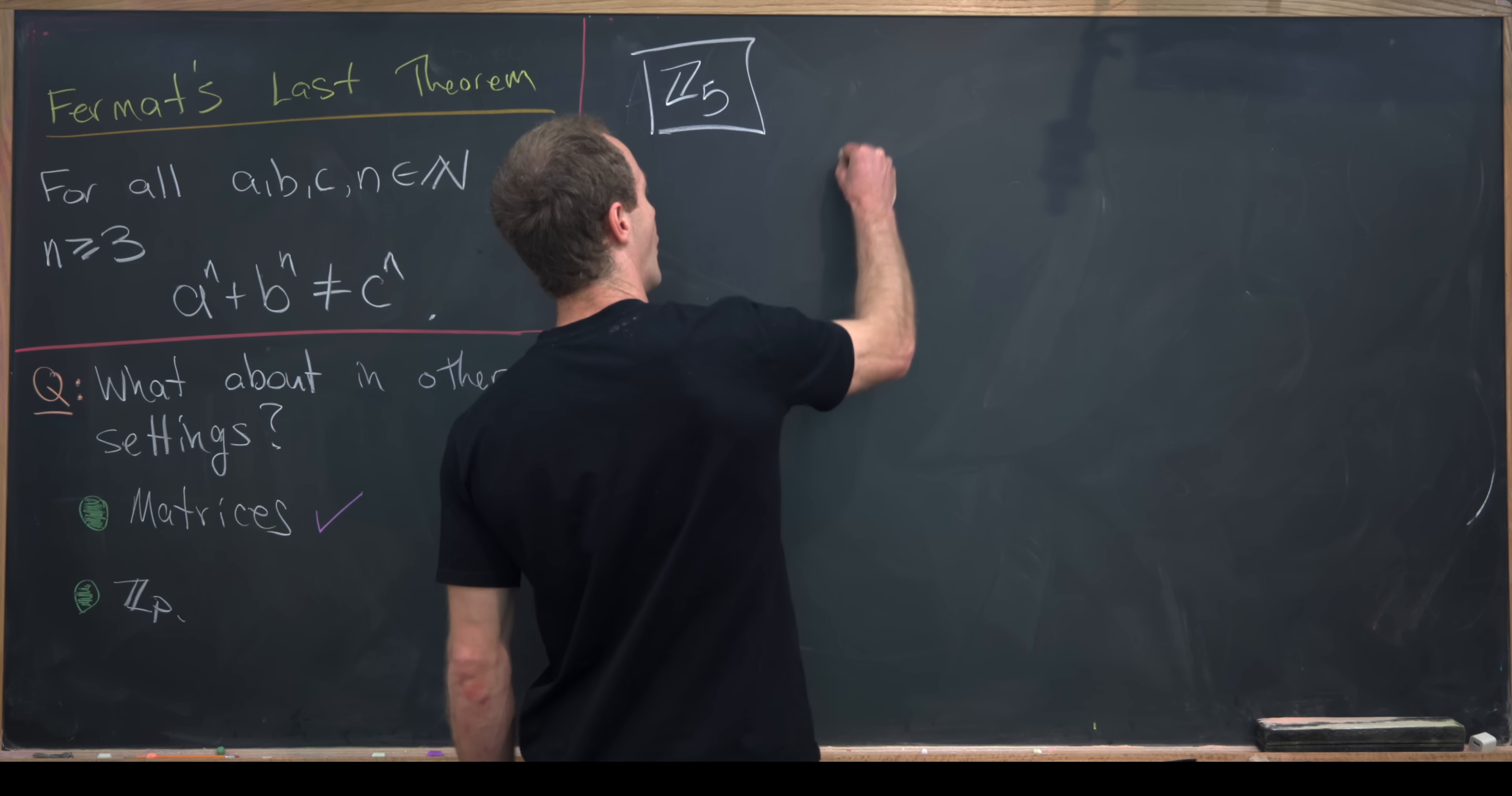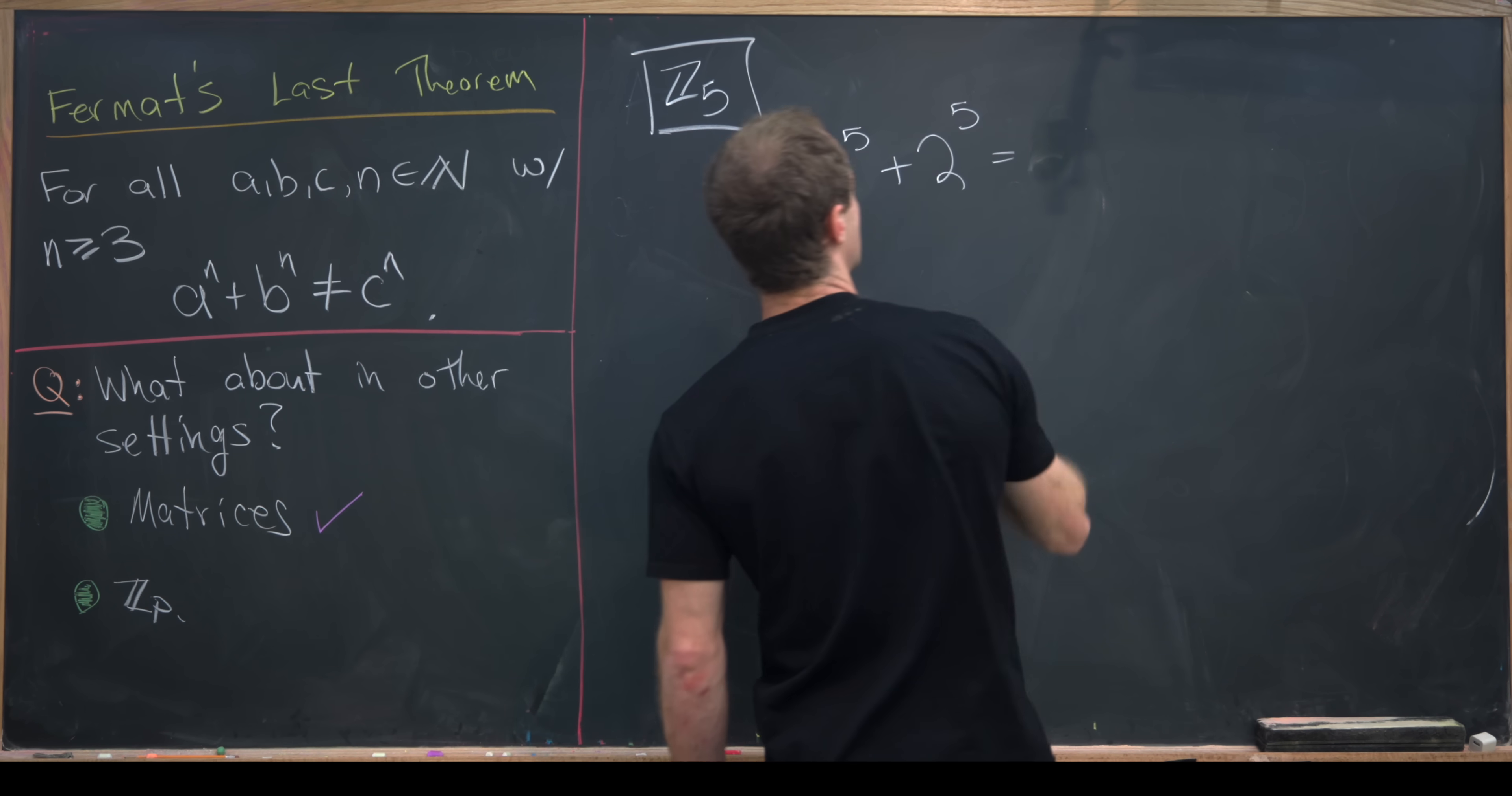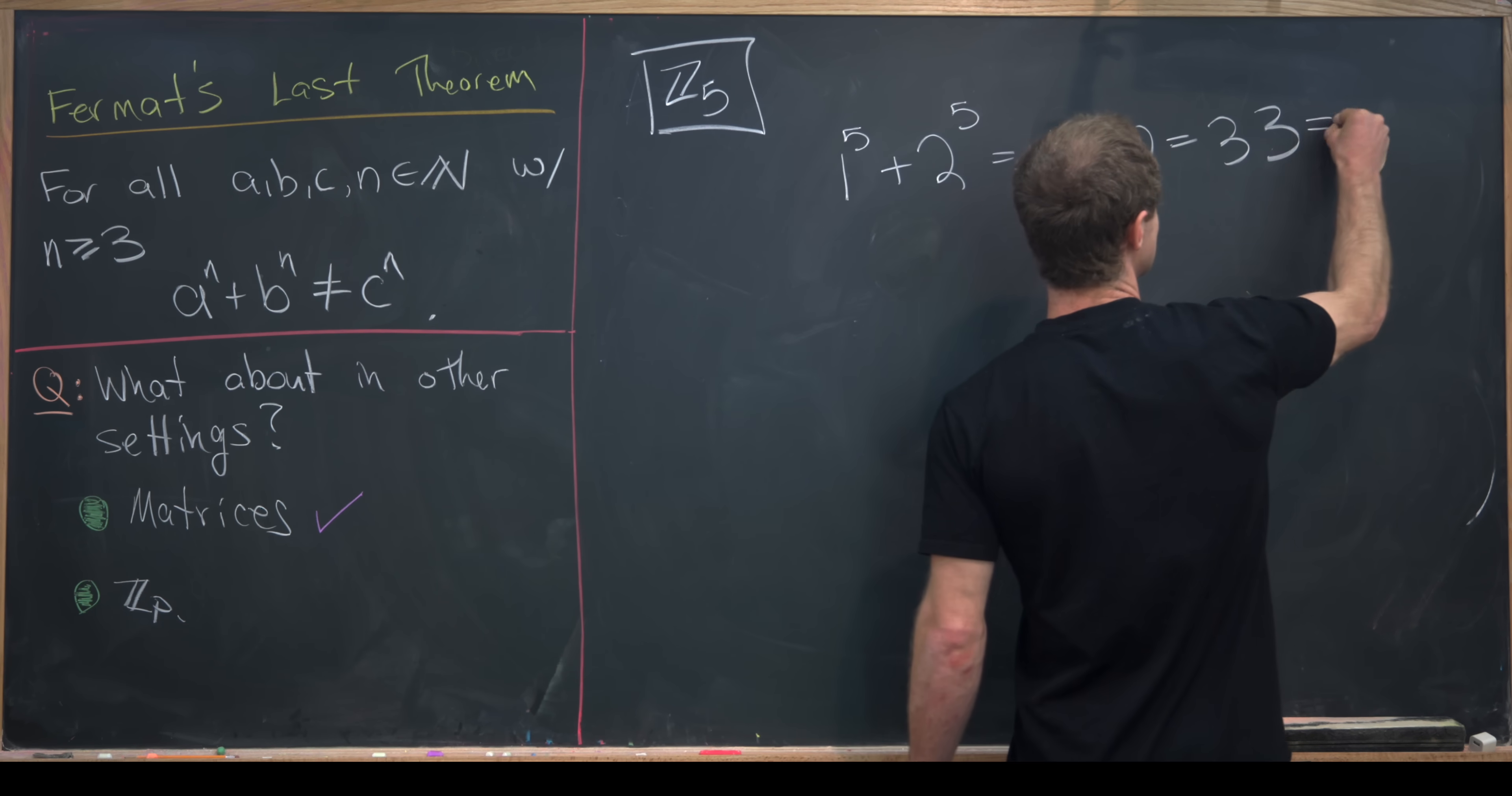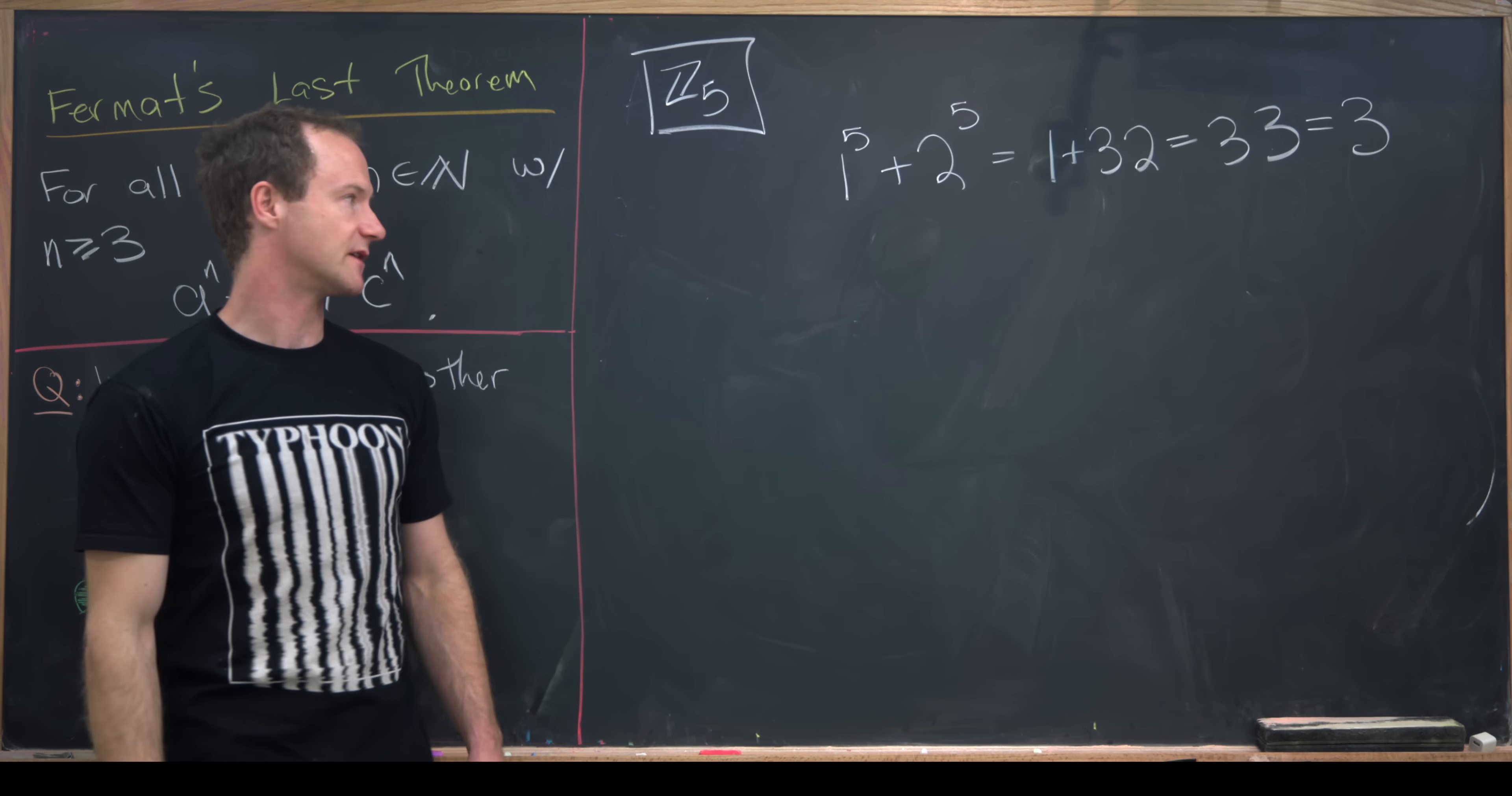So let's look at 1 to the 5th plus 2 to the 5th. And notice that that's equal to 1 plus 32, which is equal to 33. But inside of Z5, that's equal to 3 because we reduce mod 5.